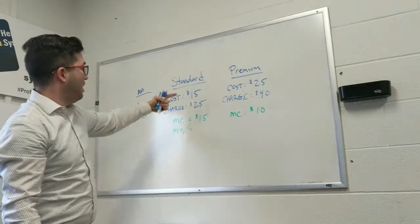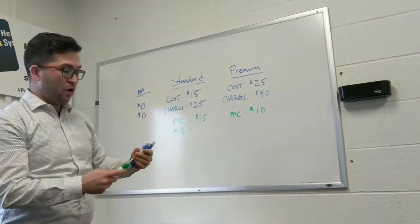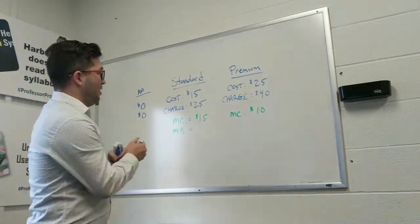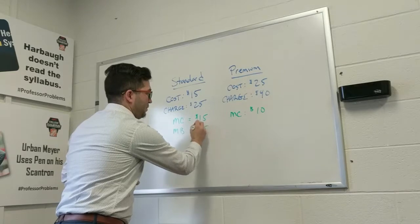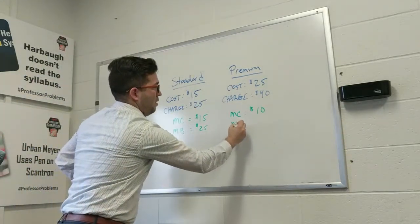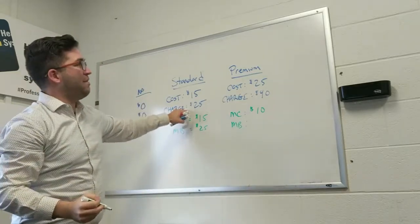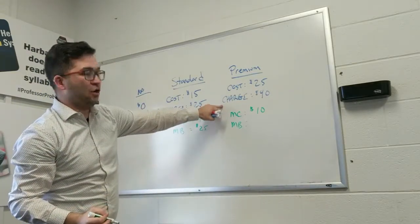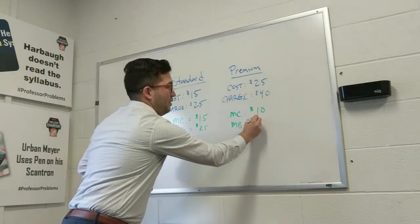So in this case, the marginal benefit going from zero to being able to charge twenty-five is going to be twenty-five dollars. Here the marginal benefit, being able to charge twenty-five, now with the premium package he can charge forty, the marginal benefit is fifteen dollars.